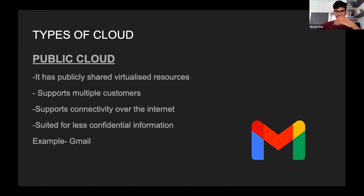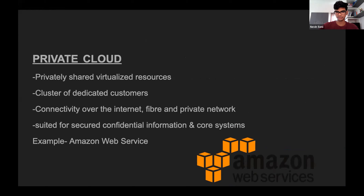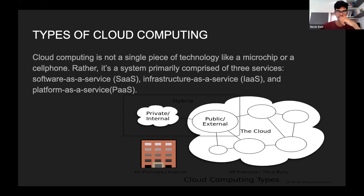Types of cloud: public cloud has publicly shared virtualized resources, supports multiple customers, supports connectivity over the Internet, and is suited for less confidential information — example: Gmail. Private cloud has privately shared virtualized resources, dedicated clusters of customers, connected via Internet, fiber, and private network, suited for secure confidential information — example: Amazon Web Services. Cloud computing is primarily comprised of three services: Software as a Service (SaaS), Infrastructure as a Service (IaaS), and Platform as a Service (PaaS).